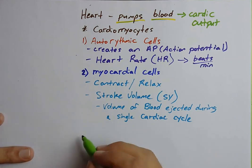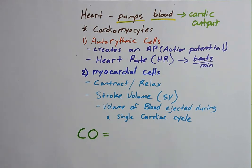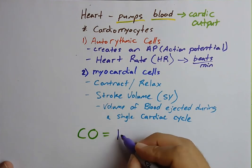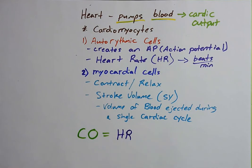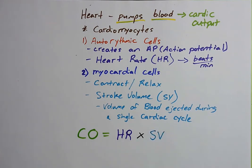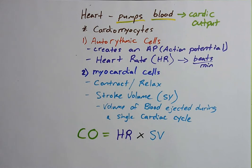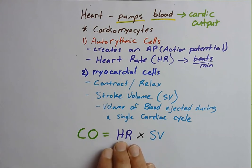All of cardiophysiology you're going to learn will be about how we change cardiac output to meet the demands of the body — oxygen demands, nutrient demands, and blood pH homeostasis. If we put this all together, cardiac output is the volume of blood ejected from the heart over time, and it's determined by heart rate and stroke volume.